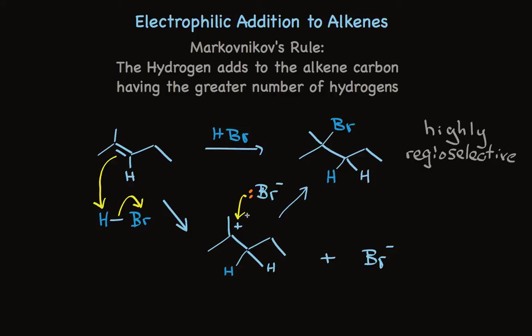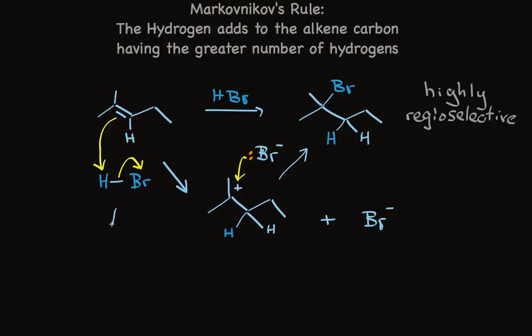So we see that the regiochemistry is the result of the proton adding to the carbon that already has the more hydrogens. Why does the proton add to that carbon? Well, it makes the more stable carbocation intermediate. This is a very important insight. The alternative position selectivity would result in this carbocation.